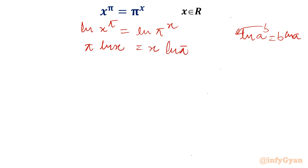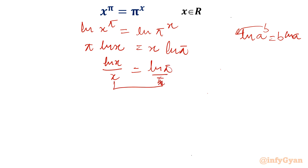If I rearrange it, the equation becomes ln x / x = ln π / π. Now simply by comparing both sides, we conclude one solution is x = π. No doubt about that.